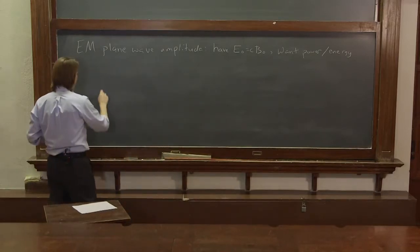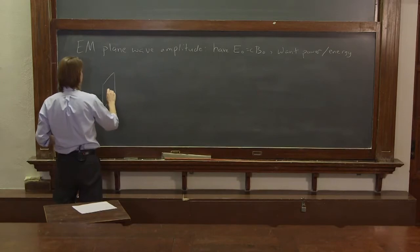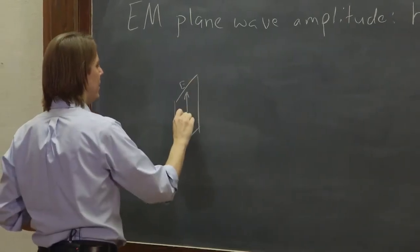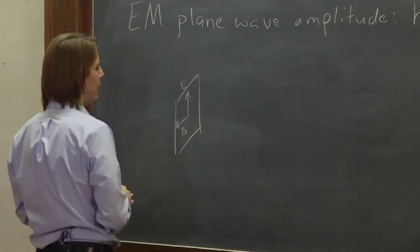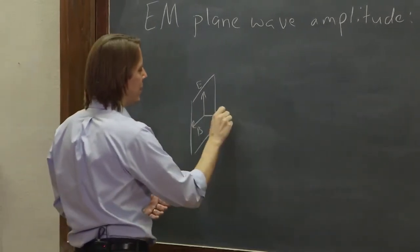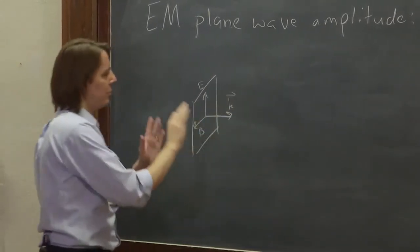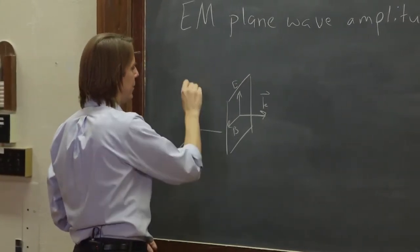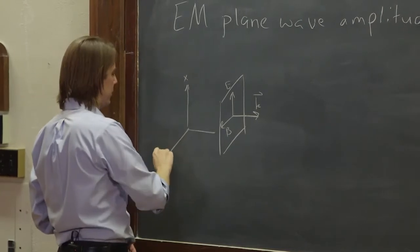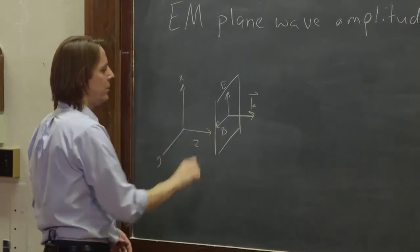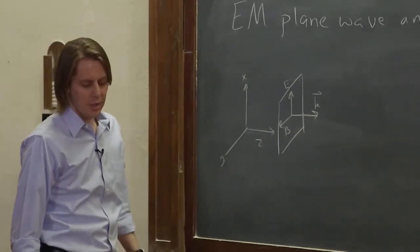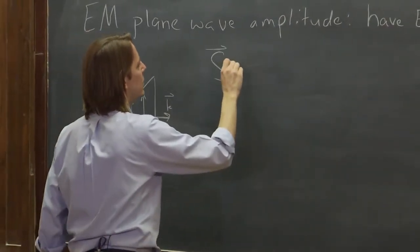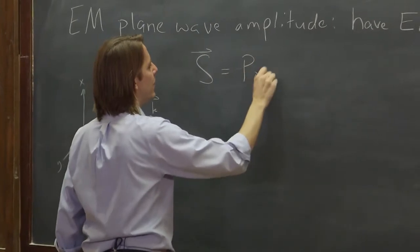So let's draw our plane wave again. In this plane, we have the E field going up and the B field going that way. E cross B tells us that K is this way, so this plane is propagating in that direction. We want to characterize the energy flow with a new vector — S is the Poynting vector.